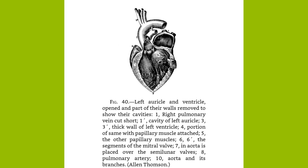The aorta arches backward to the left over the root of the left lung, to descend along the spinal column at the left to the fourth lumbar vertebra, about opposite the umbilicus, where, considerably diminished in size by the branches it has given off, it divides into two common iliacs. For convenience, its different parts are named according to their position: the ascending aorta, the arch of the aorta, and the descending aorta, the last being subdivided into the thoracic and the abdominal aorta.